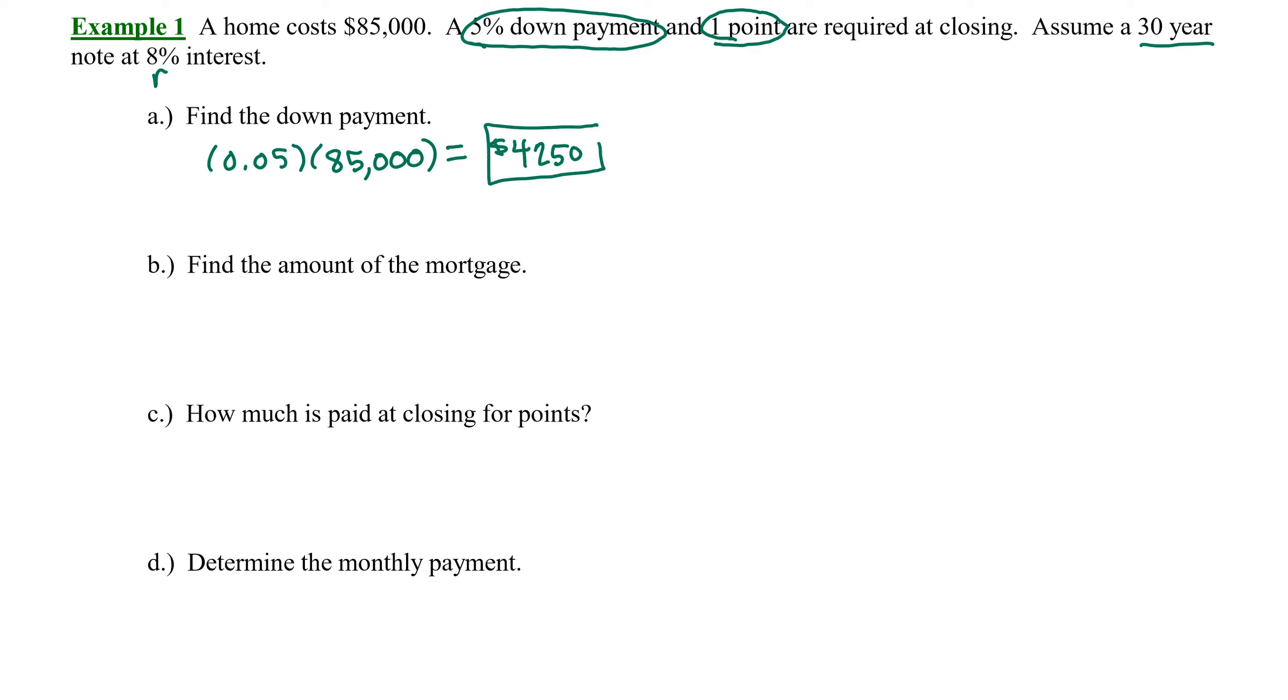That gives us $4,250. So a down payment is usually something that you have to save up for over time, because this is cash that is required at closing. Now the good thing about making a down payment is we are paying zero interest on that down payment. That money is directly applied to the price of the house. And now we're already beginning to build what's called equity in our home. That means you own $4,250 worth of that home. Again, that's called equity.